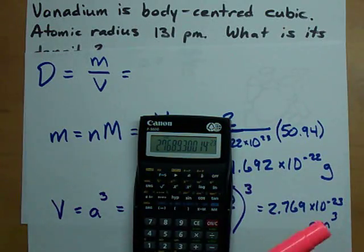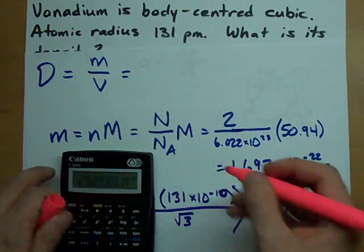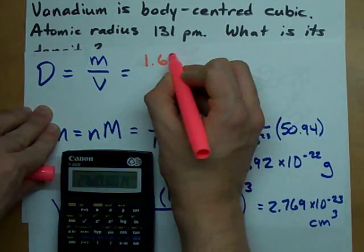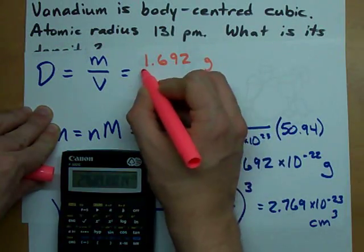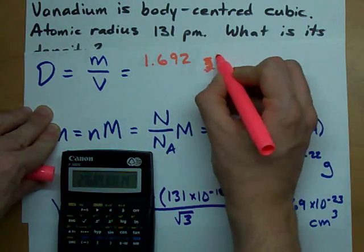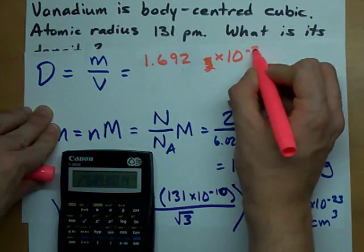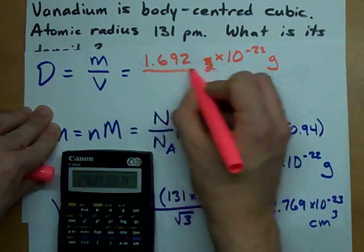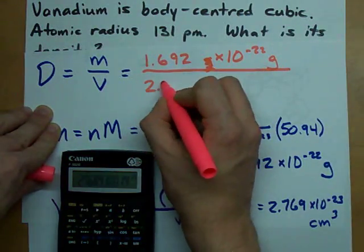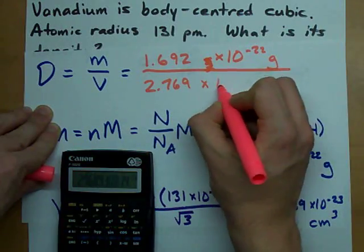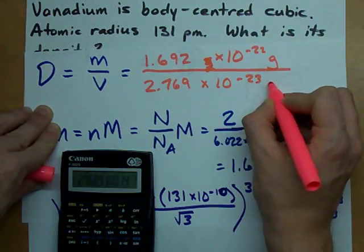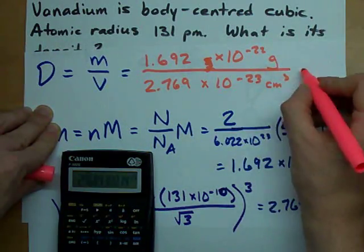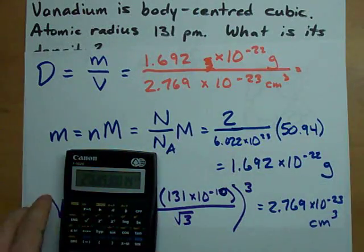Sweet. Now we can just plug these right into our density formula. 1.692 times 10 to the power of negative 22 grams divided by 2.769 times 10 to the negative 23 centimeters cubed. This seems like a typical value.